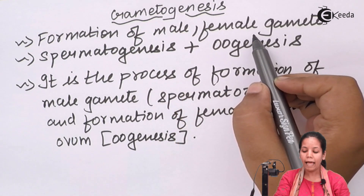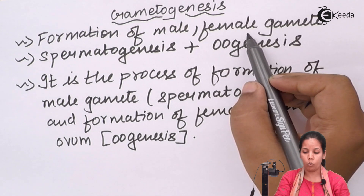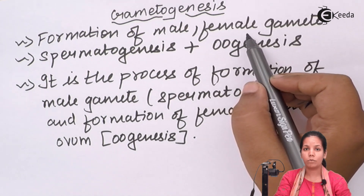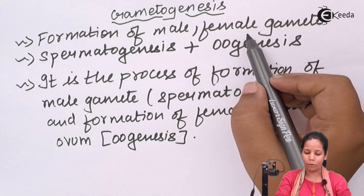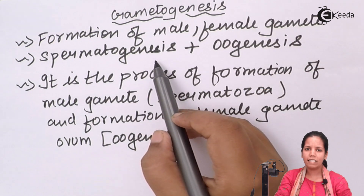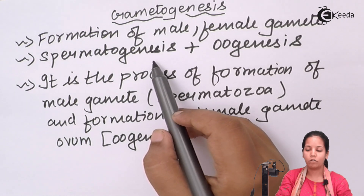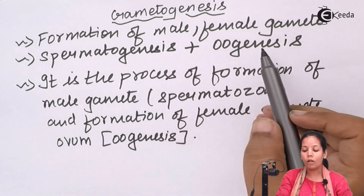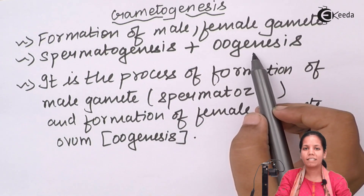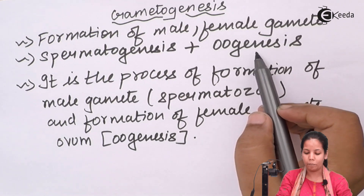The male gamete is sperm and the female gamete is egg or ovum. The sperm is haploid, and the ovum is also haploid. Spermatogenesis is the process of formation of sperm, and oogenesis is the process of formation of the egg cell or ovum.